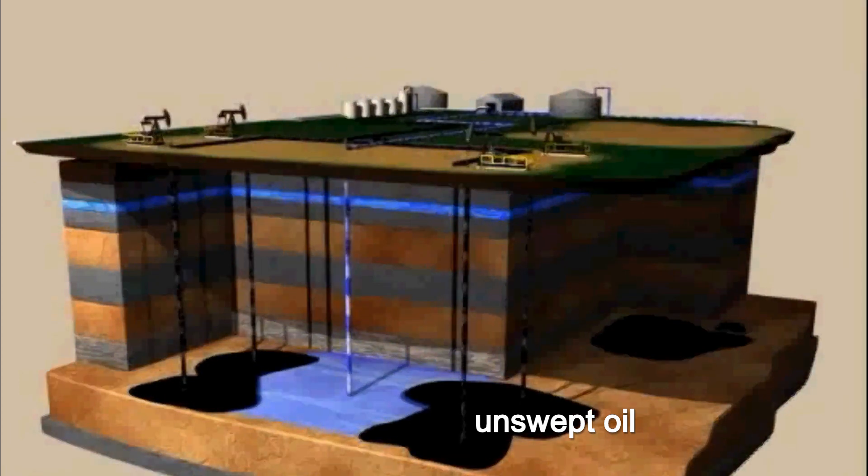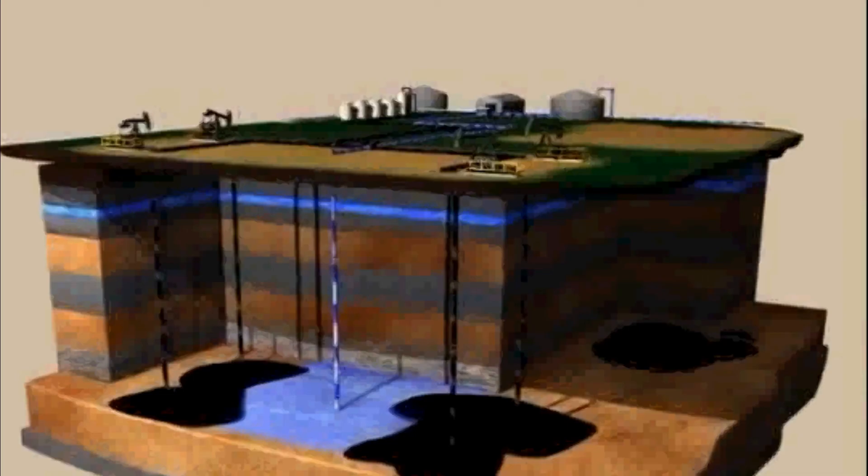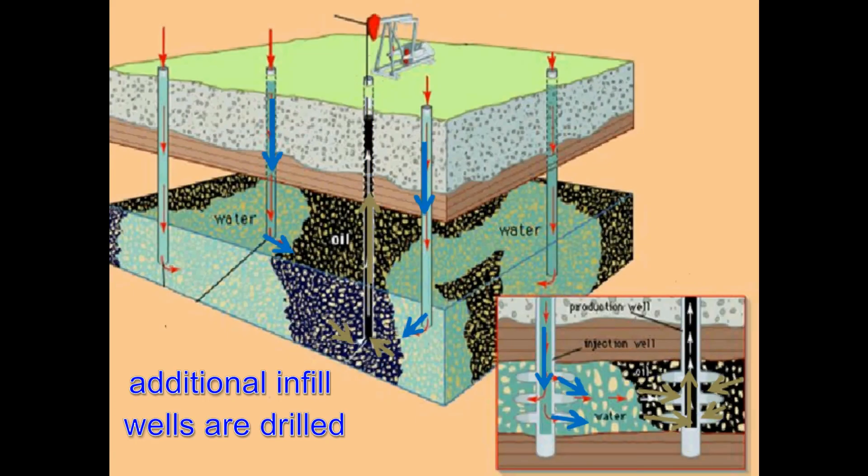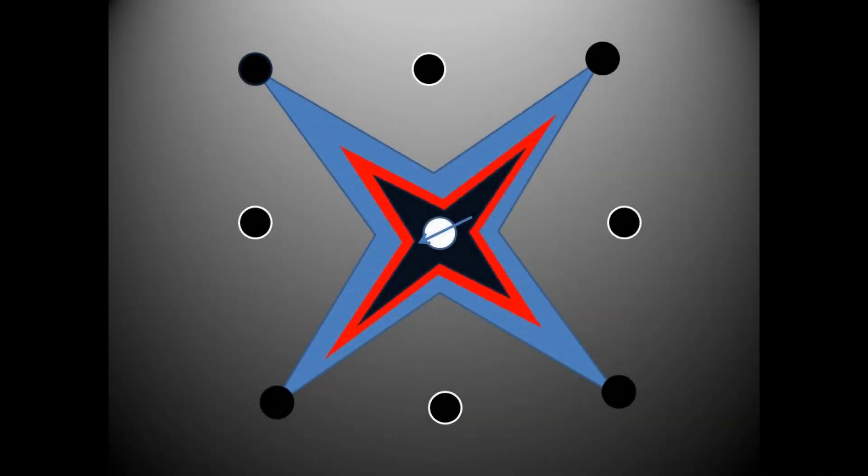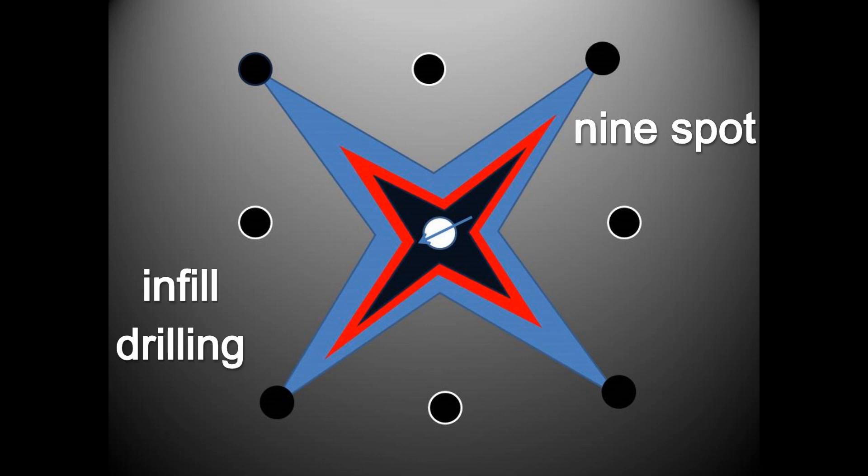To recover this unswept oil, the engineer sometimes drills additional wells that are called infill wells to get this remaining oil. Although expensive, the recovery of this unswept oil still trapped in the reservoir may make it worthwhile. Drilling more wells can convert a five spot pattern into a nine spot pattern. It is also referred to as infill drilling.